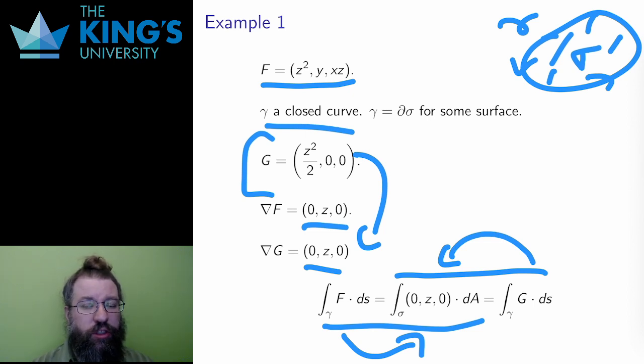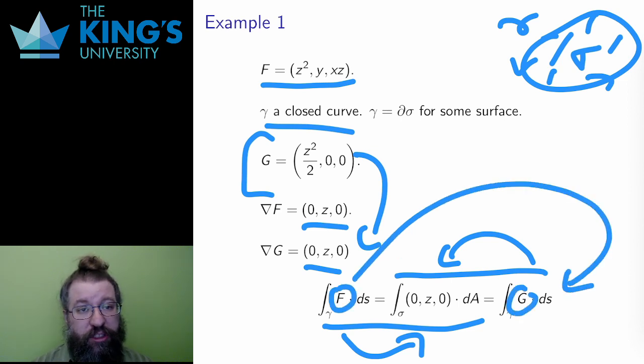Therefore I can essentially switch from the field F to the field G for the line integral via Stokes' theorem. And G is a much simpler field than F, so there's a good chance that the line integral of G is easier to calculate than the line integral of F.